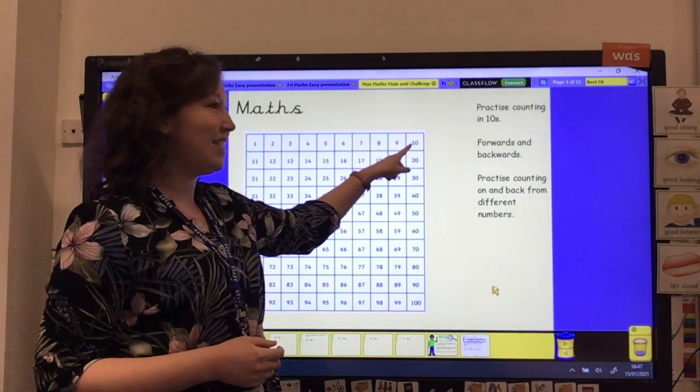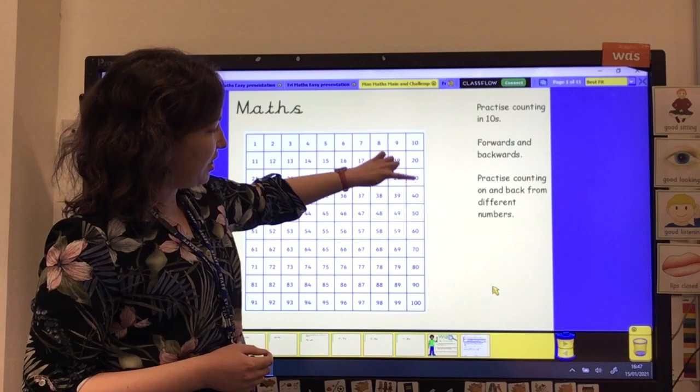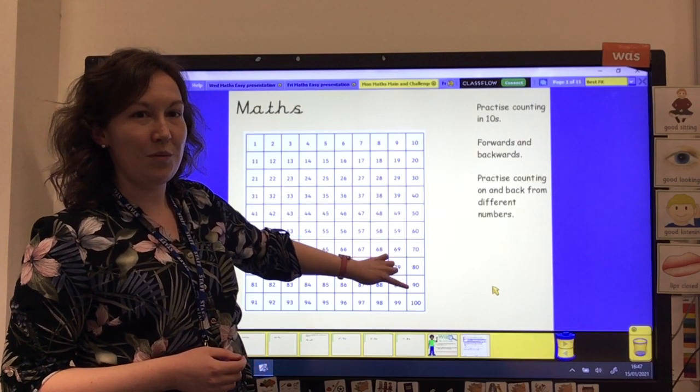So if we start off on 10 and count on in 10s, we've got 10, 20, 30, 40, 50, 60, 70, 80, 90, 100.